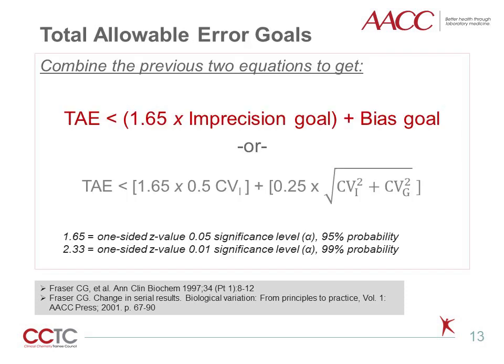Total allowable error, TAE, is derived by combining the two previous equations. The standard calculation for TAE is 1.65 times imprecision plus bias, where 1.65 is the one-sided 95% significance level based on a Z-distribution. If setting TAE limits to 99% probability, 2.33 is used as the multiplying factor instead of 1.65.